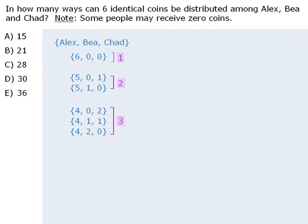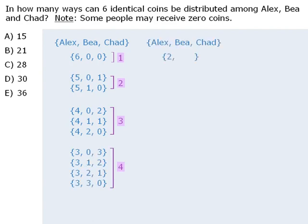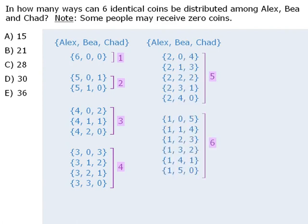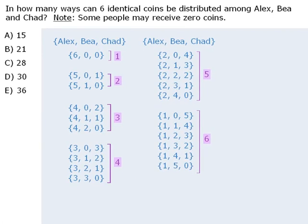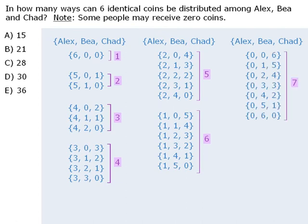At this point, we may recognize a pattern developing. When Alex receives 3 coins, there are 4 possible outcomes. When Alex receives 2 coins, there are 5 possible outcomes. When he receives 1 coin, there are 6 outcomes, and when he receives 0 coins, there are 7 outcomes.